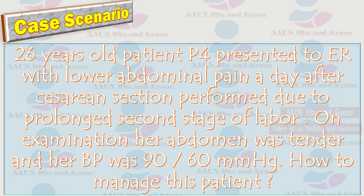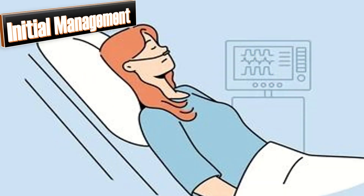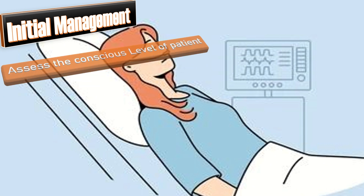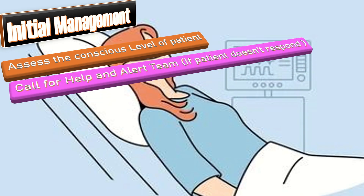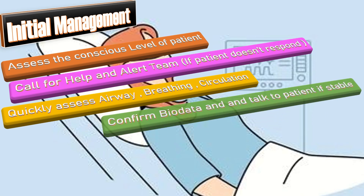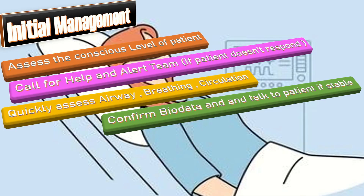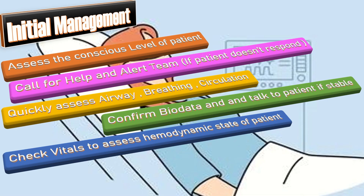How to manage this patient? As this is an emergency, first we must assess the conscious level of the patient. Call for help and alert the team if the patient does not respond. Quickly assess airway, breathing, and circulation. If everything is satisfactory, confirm bio data and talk to the patient if she is stable. Check vitals to assess the hemodynamic state of the patient.